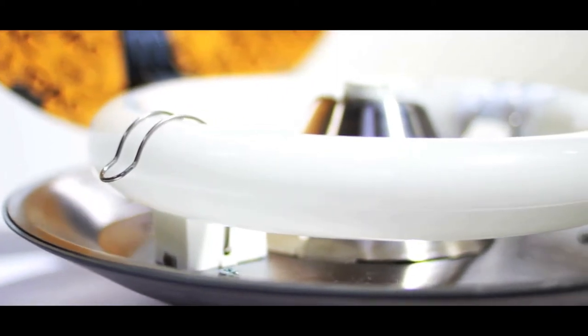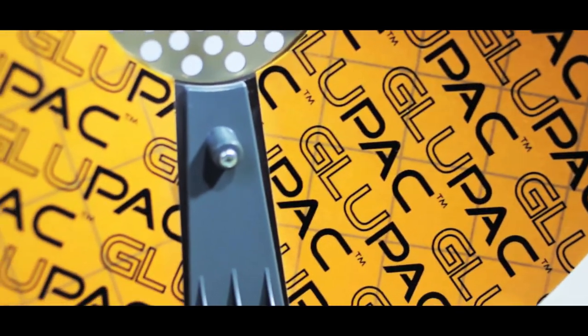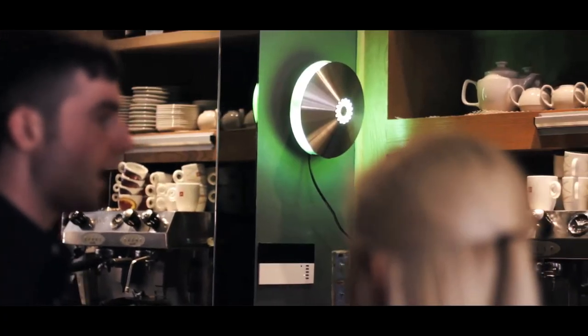Once attracted to the UV light, insects are caught on the discreetly positioned glue board that gives 100% effective glue area. A method much less conspicuous than electric killing grid units.